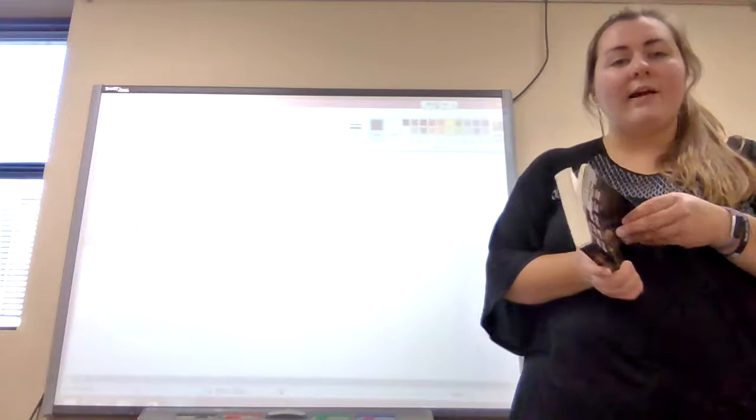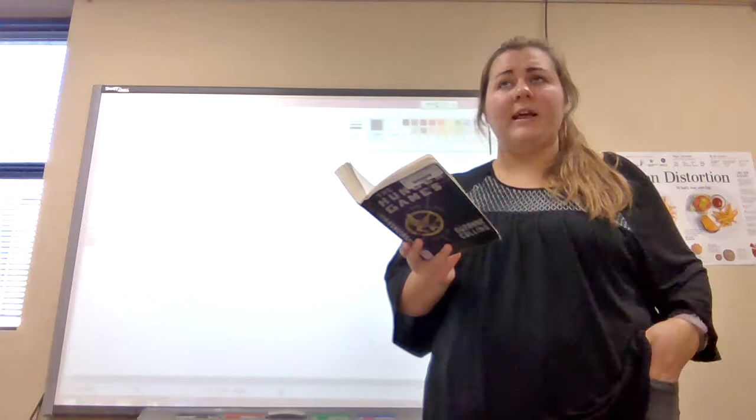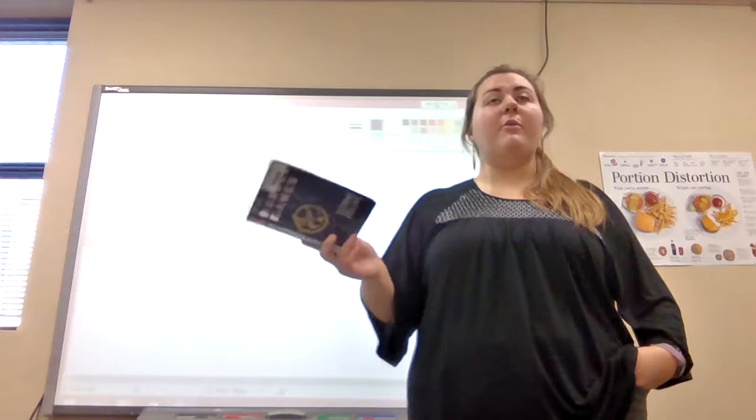How the kids are chosen is that there's what's called a reaping, where each of the kids' names are put into a bowl, per se, and they're drawn out. So there's a chance, it's a probability that you will be chosen. So what I would have the students do is, it's early on in the book, so I would have them try to find that page. So I know that the page is actually 16. So I'd say, hey, turn up page 16, and let's look to see what we can find.